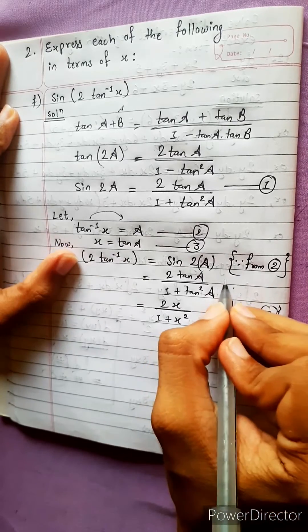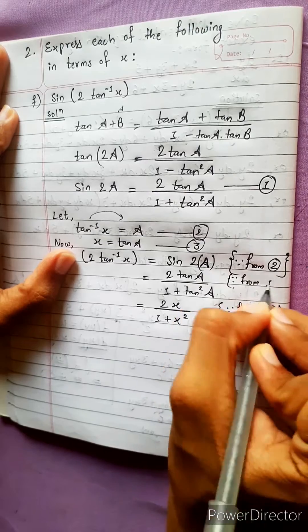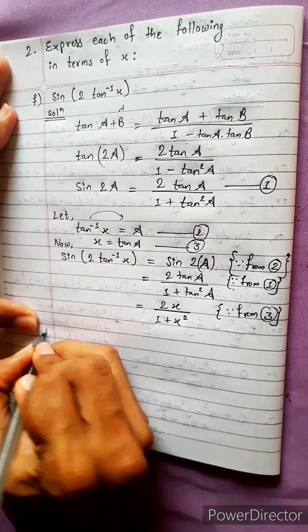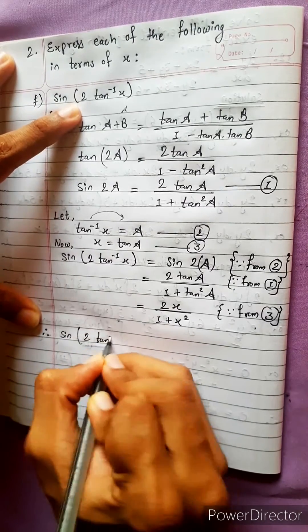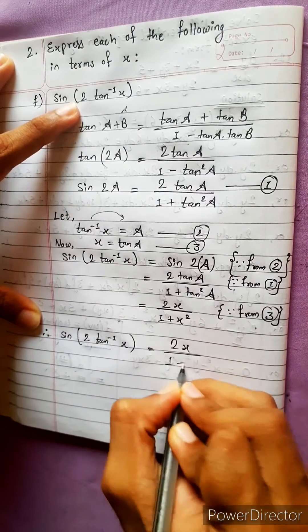This we got from equation 3. This we got from equation 1. No need to write these reasons but I'll return myself. Therefore, what is the question? Sin(2 tan inverse x) equals to direct 2x upon 1 plus x square. It is the answer.